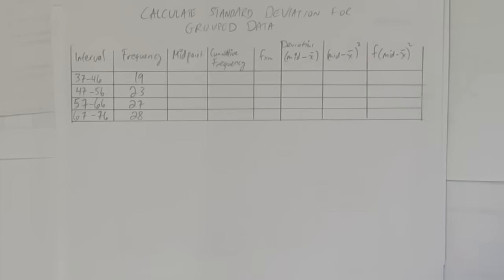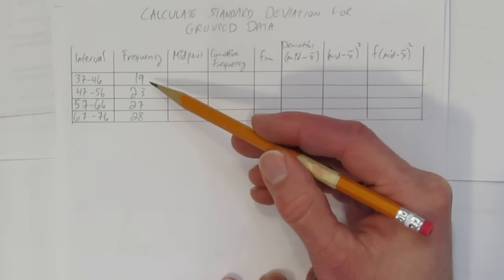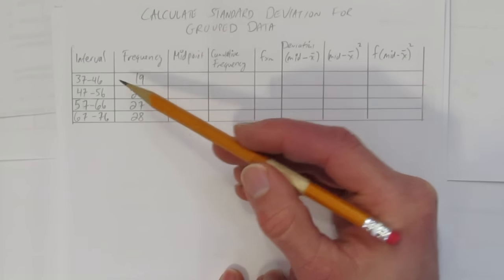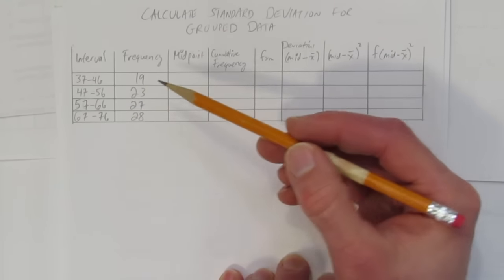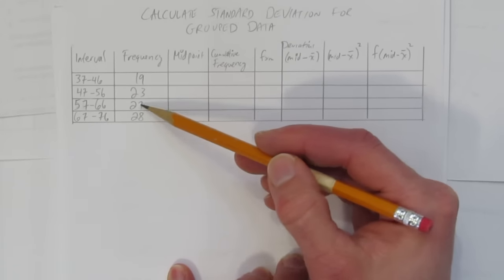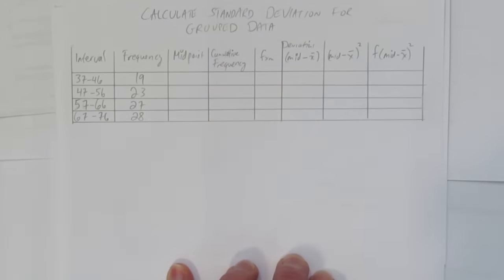So, given already in the table are some intervals: 37 to 46, 47 to 56, 57 to 66, and 67 to 76. And the frequencies of whatever this was, how many times each of these intervals came up in a survey: 19 times, 23 times, 27 times, 28 times.